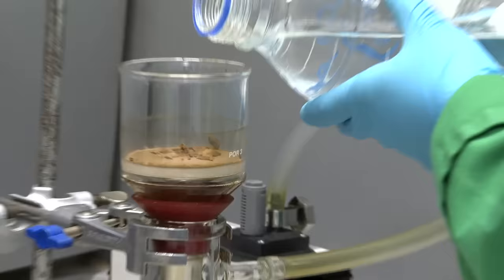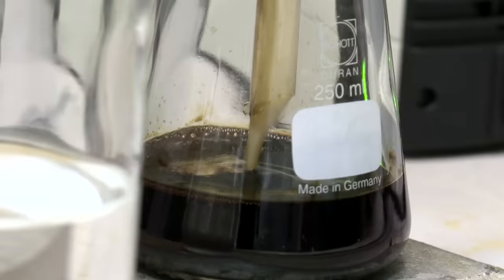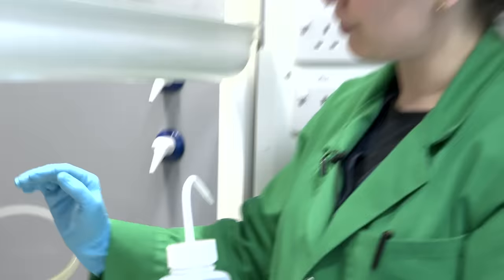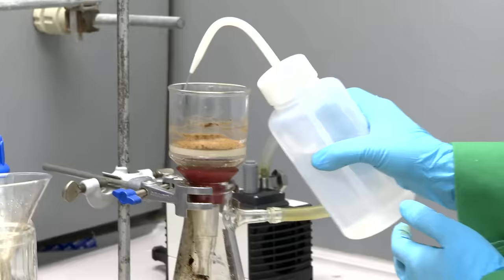We're washing away some of these impurities, some of the byproducts that are formed during the reaction or unreacted starting material. And then I'm going to repeat this washing procedure with diethyl ether. Diethyl ether is an organic solvent, so similar to how we've just removed any water soluble impurities, we will now remove any impurities that are soluble in organic solvents. And then the hope is that by the end of this procedure, we'll have nice pure thalidomide remaining.